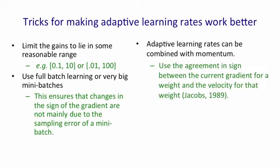There's nothing to prevent you combining adaptive learning rates with momentum. So Jacob suggests that instead of using the agreement in sign between the current gradient and the previous gradient, use the agreement in sign between the current gradient and the velocity for that weight, so the accumulated gradient. And if you do that, you get a nice combination of the advantages of momentum and the advantages of adaptive learning rates.